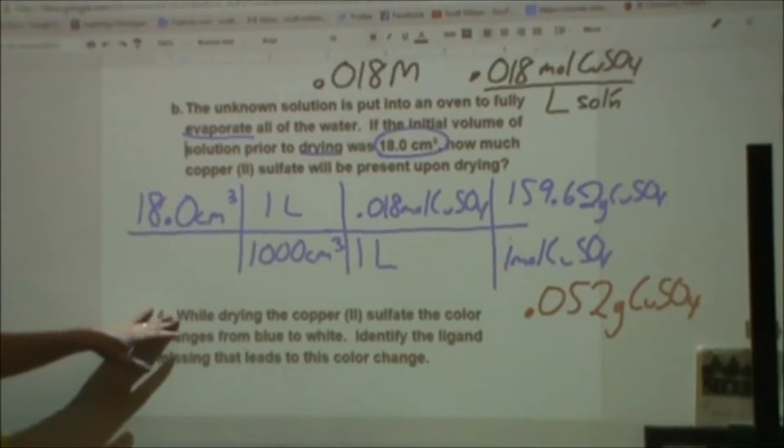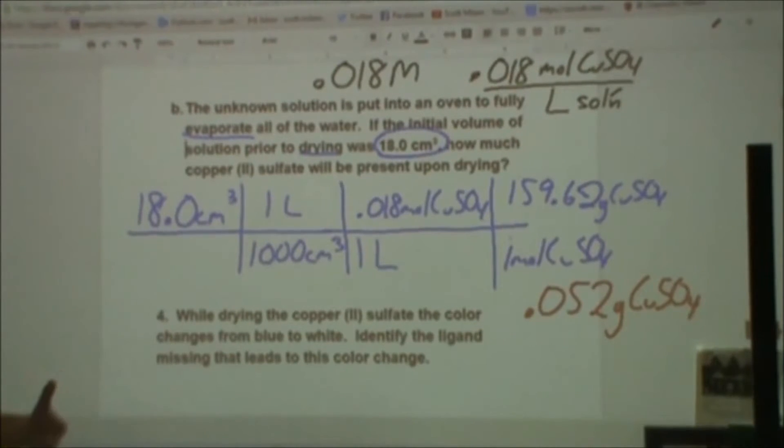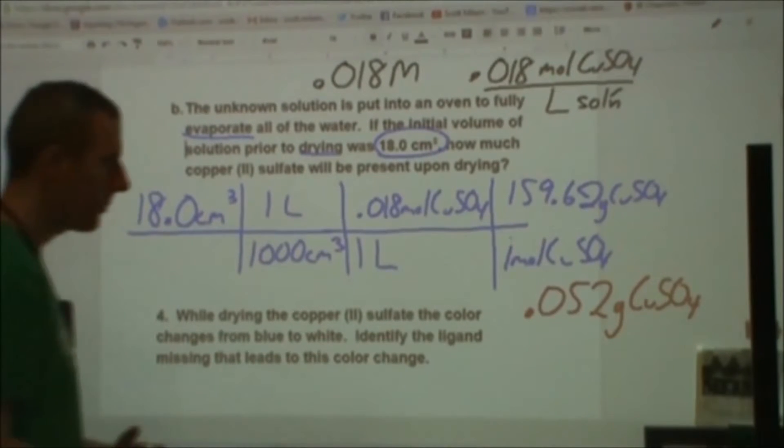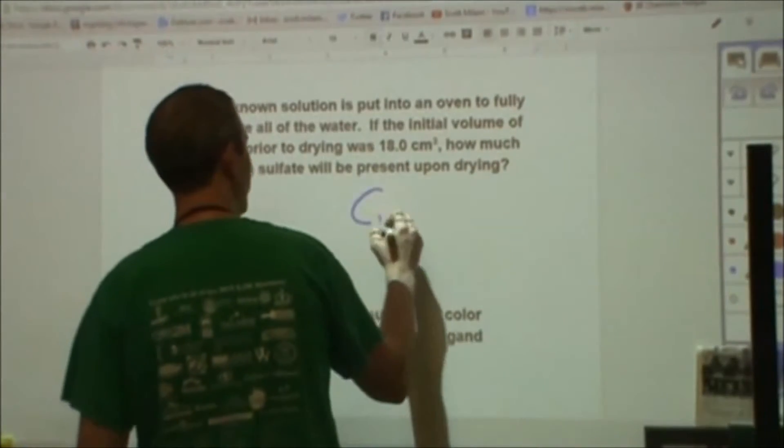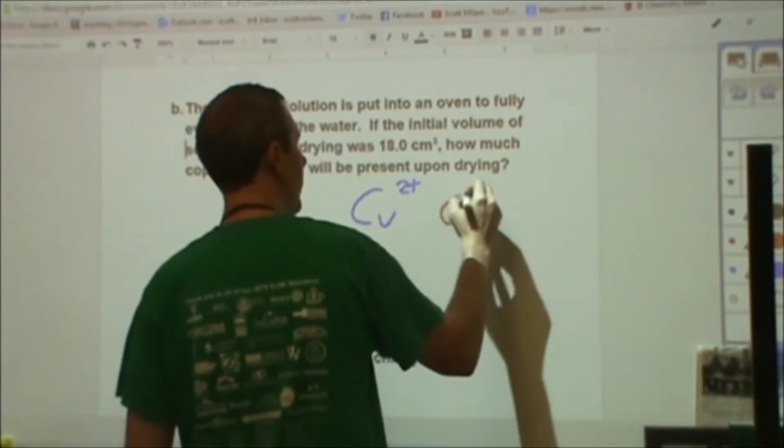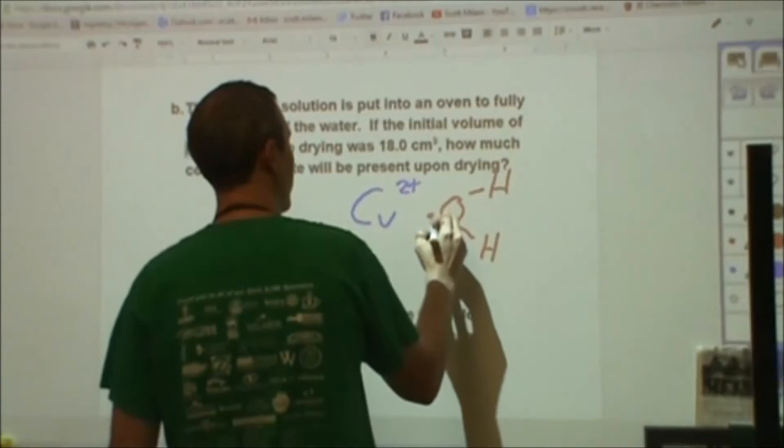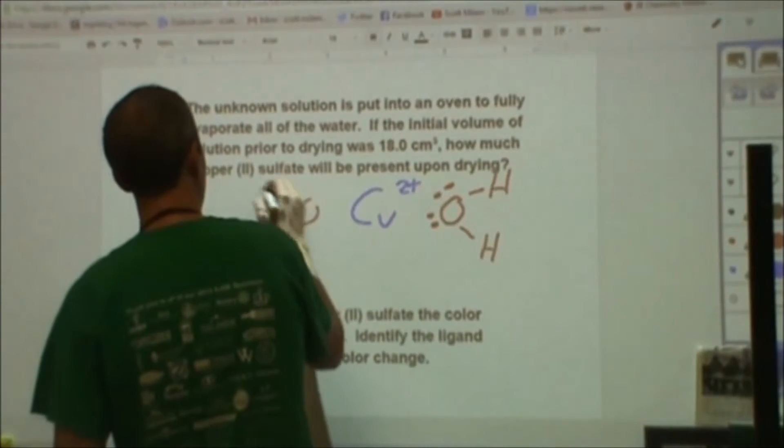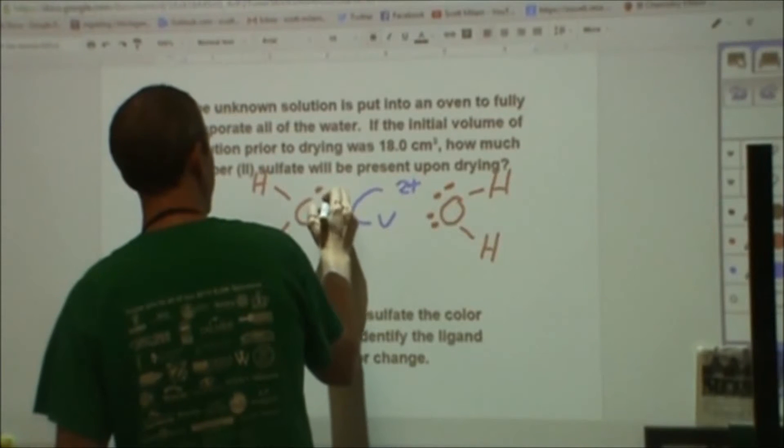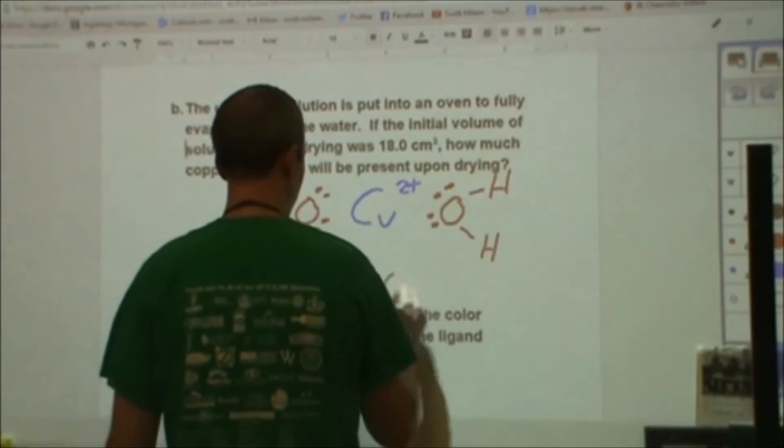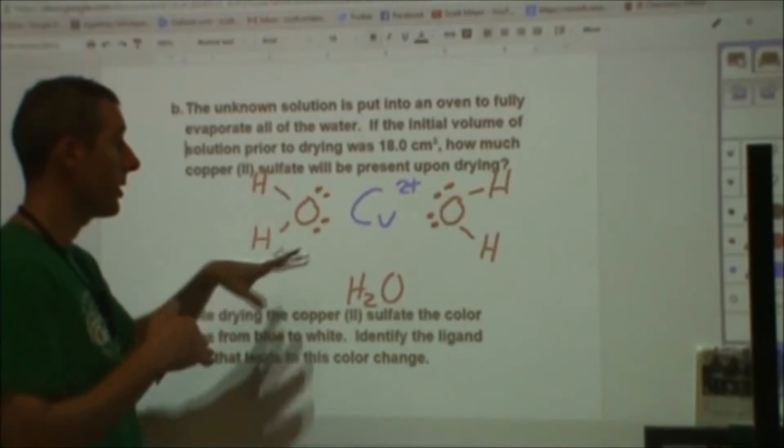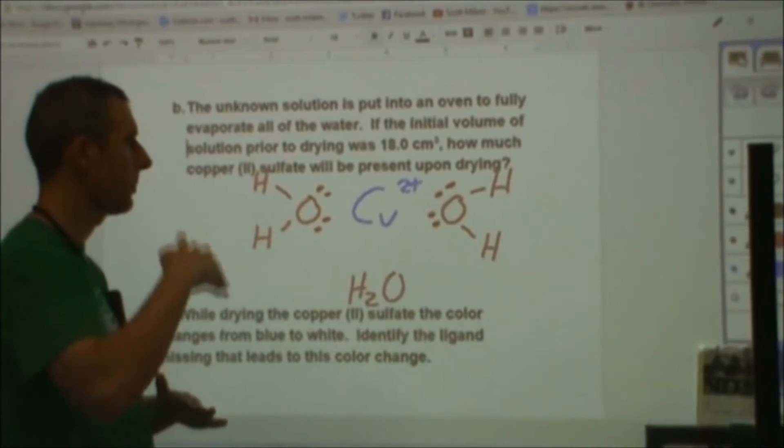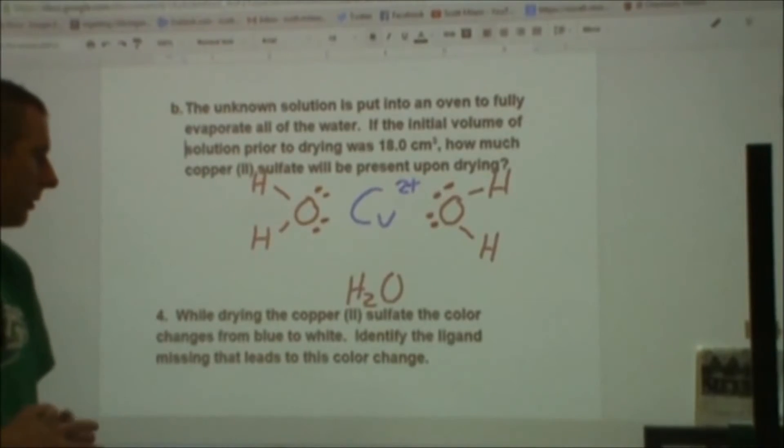In number four it says, while this is evaporating and drying, the copper sulfate color changes from blue to white. So what's happening that's causing that color change? What ligand is going away? That draws back from our original question one. The copper(II) had been surrounded by water molecules where the lone pair on the water was interacting with the copper(II). So the ligand that's leaving, that's causing this color change to go from blue to white, is the water. And as that happens, we're seeing those d orbitals return to a degenerate state where all five are equivalent as opposed to being split where two and three are different from each other.